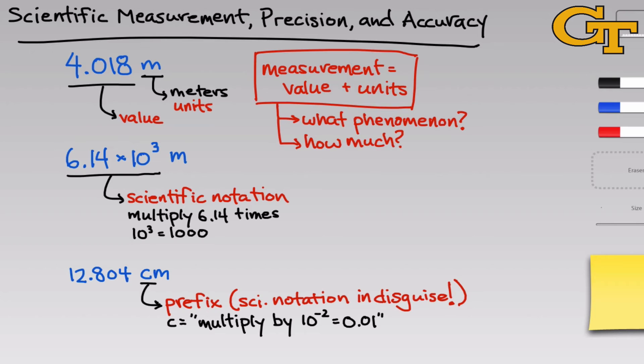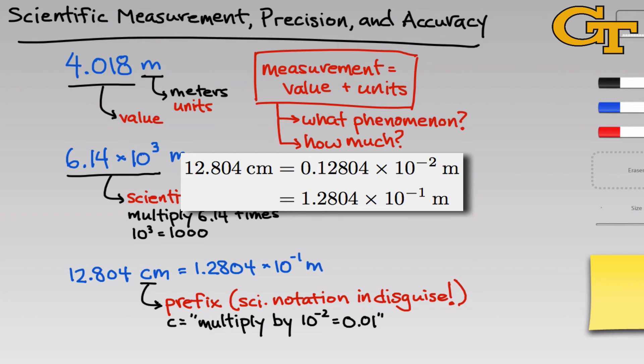So if we wanted to write this measurement using scientific notation to eliminate the prefix and just use meters, we would multiply the measurement by 10 to the negative 2 and convert to meters, which leads to 1.2804 times 10 to the negative 1 meters, where we shifted the decimal point to make 12.084 fit between 1 and 10, which meant we went from 10 to the negative 2 to 10 to the negative 1.